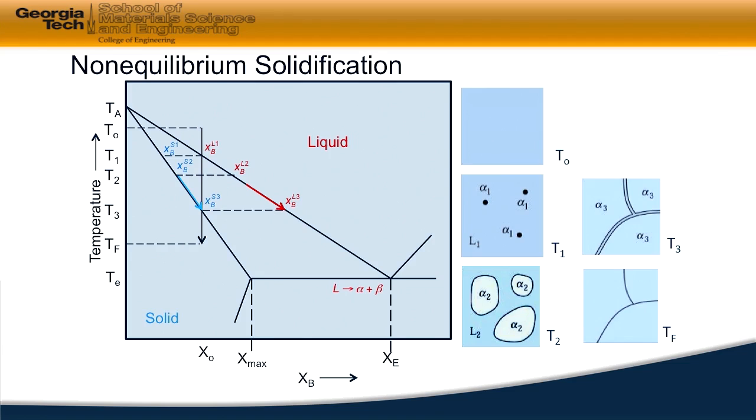As soon as we hit the liquidus line, we begin to form some solid, and the compositions of those two phases are given by the tie line that we talked about in Module 7. The diagrams to the right at temperature T1 show a small amount of the alpha phase that's formed, and that alpha phase has the composition given by the points on the solidus line.